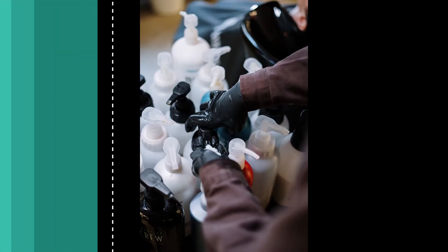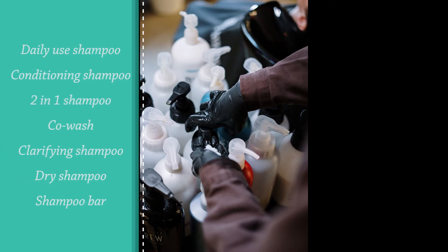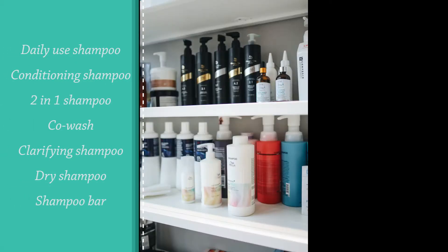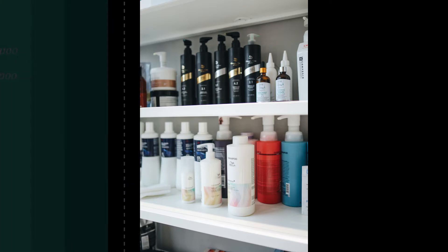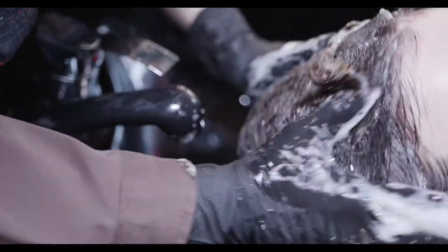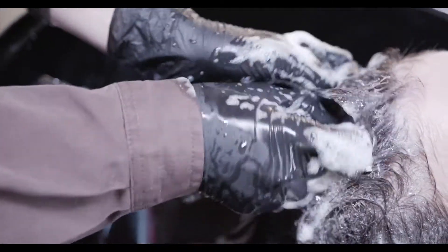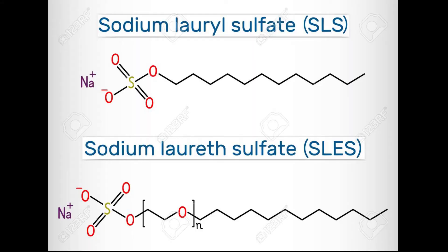There are different types of shampoo: daily use shampoo, conditioning, two-in-one, co-wash, clarifying, dry shampoo, shampoo bar, etc. Most of the complaints that I hear and also experienced is that most shampoos in the market are very drying and sometimes they have ingredients that are not safe, like SLS or SLES.